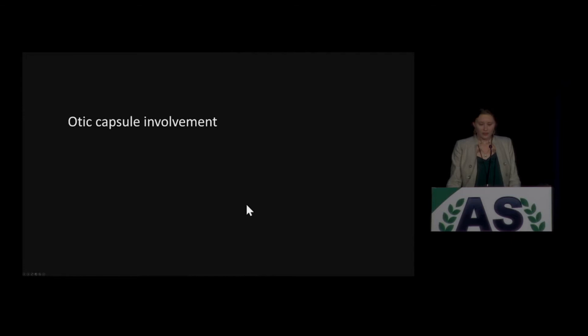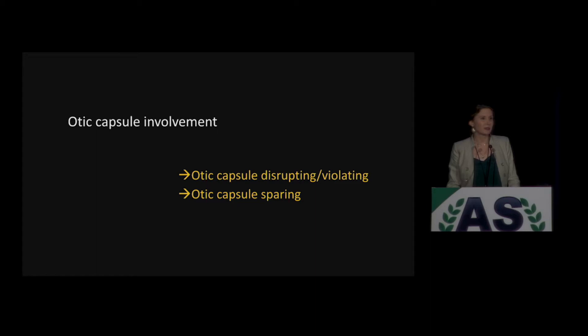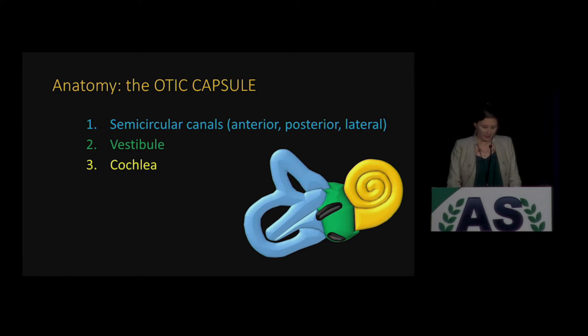Otic capsule involvement actually greatly increases your risk of sensorineural permanent hearing loss, facial nerve injury and paralysis, and CSF fistulas. Ossicular dislocations are a source of conductive hearing loss, and these are actually fixable with variable outcomes — you can go in and repair these. That's why we have these two as our objectives. In terms of this classification system, this is not a system with a whole bunch of subtypes. It is really, really easy — it's binary. It's either involving the otic capsule or it's not. We describe them as disrupting, violating, or sparing.